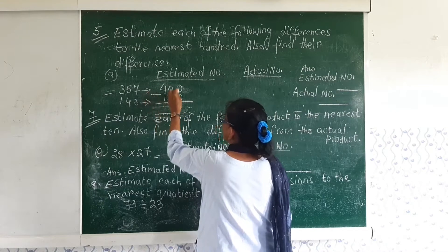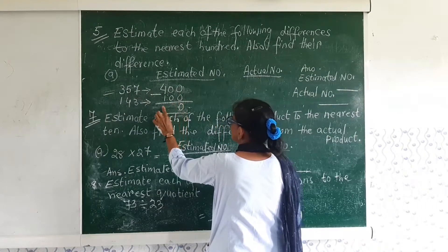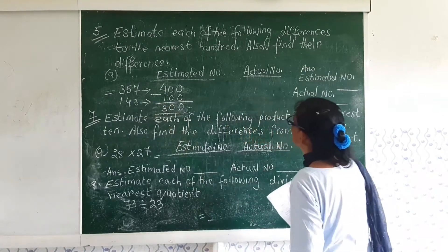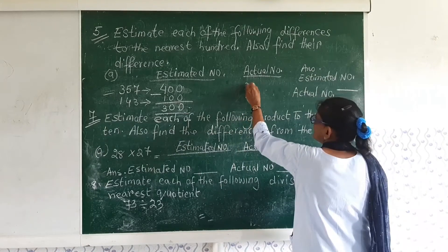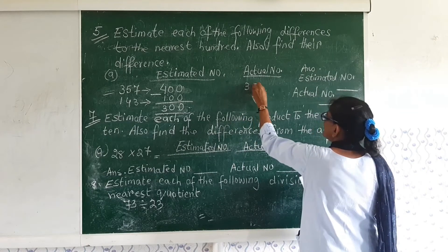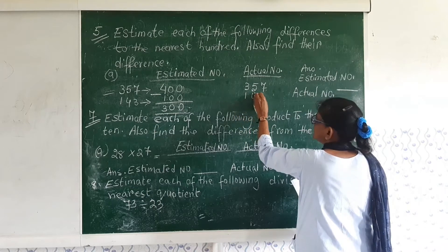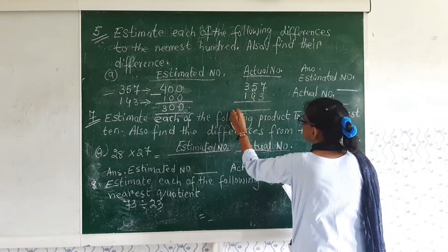And here 143 which is less than 50, so it will turn to 100. So now we have to subtract. I will get 300. And your actual number is, I have to copy the number, 357 minus 143.